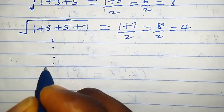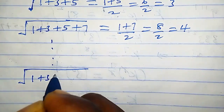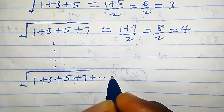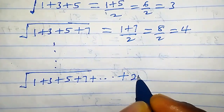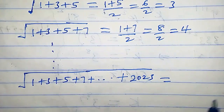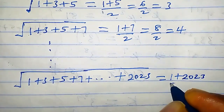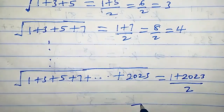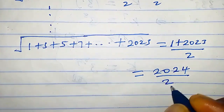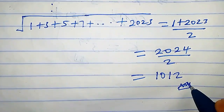If we continue on and on like that, we're going to have square root of one plus three plus five plus seven plus ... plus 2023. In this case we are going to add the first and the last term, so we have one plus 2023 and divide it by two. This equals 2024 over two, so when we divide we get 1012, which is the required solution.